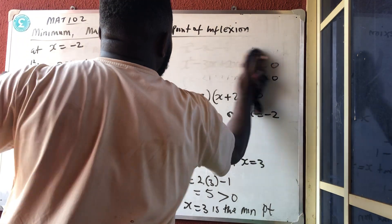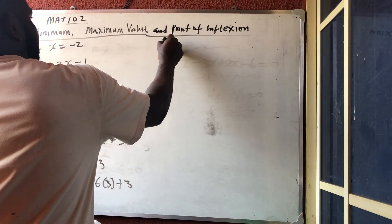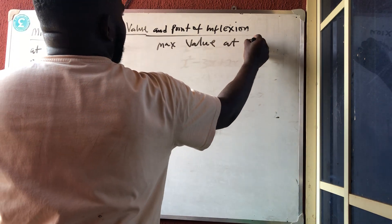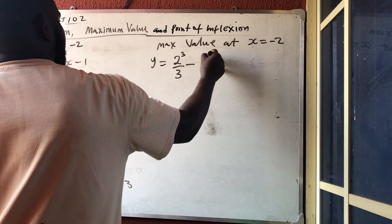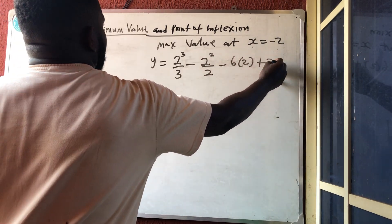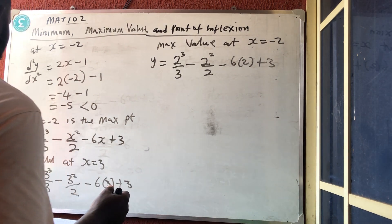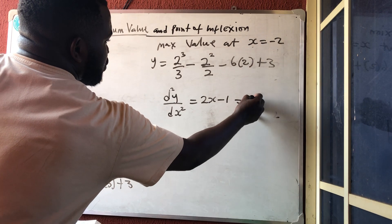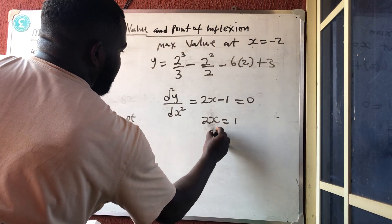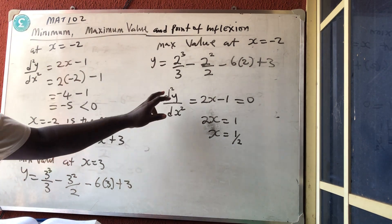For the maximum value, at x equal to minus 2: y equals (minus 2)³ over 3 minus (minus 2)² over 2 minus 6 times (minus 2) plus 3 — that gives your maximum value. To get the point of inflection, take the second derivative 2x minus 1, equate it to 0: 2x equals 1, so x equals 1/2. This value x equals 1/2 is the point of inflection because it makes d²y/dx² equal to zero.